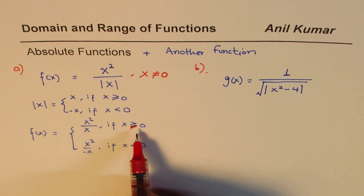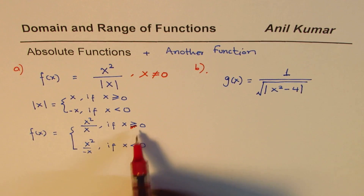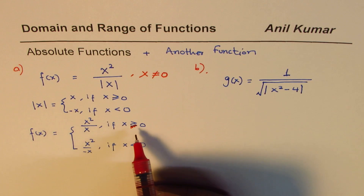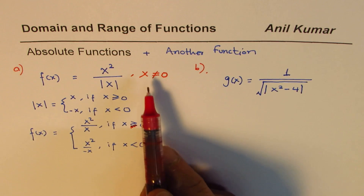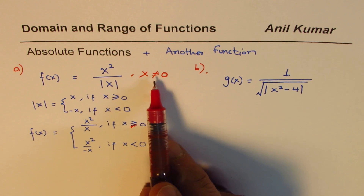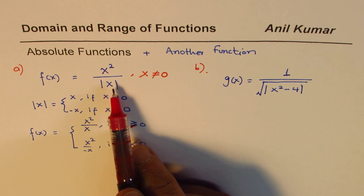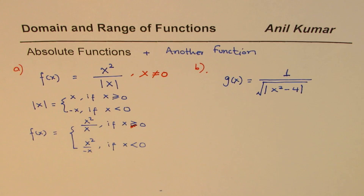Now, it is important to note that absolute x is in the denominator, so x is not equal to 0. Since x is not equal to 0, when we redefine our function f(x), we should not include the equal-to sign. This is a constant reminder: when the absolute value is in the denominator, you should not include the equal-to sign — x equals 0 is not in the domain of this function.